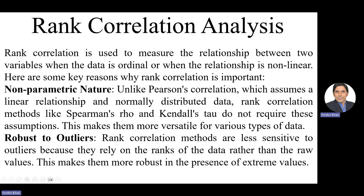If the data violates the assumptions of linear relationship and normality, rank correlation methods like Spearman-Rho and Kendall-Tau do not require these assumptions, so we can use them in case of violation. Rank correlation methods are also robust to outliers because they rely on the ranks of the data rather than the raw values. Outliers do not create serious problems because the correlation depends on ranks rather than the original data, making these methods more robust in the presence of extreme values.